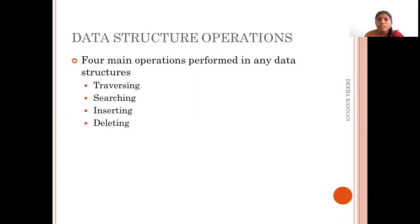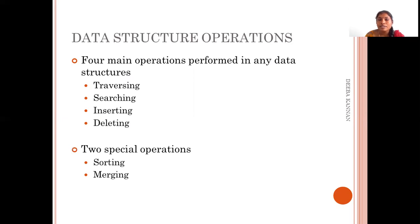These are the four major data structure operations, and we will see them for each data structure separately along with their algorithmic execution. Along with these, we have two special operations: sorting and merging. Sorting means arranging data in ascending or descending order, and there are different algorithms you can choose for the best sorting technique. Merging is combining two records — when fields match, we can append them, and when merging two sorted arrays, the resultant merged array should also be sorted.